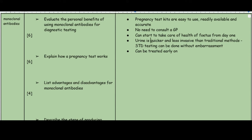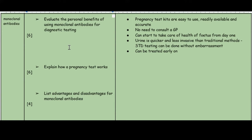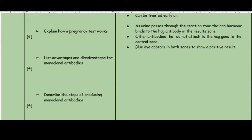Explain how a pregnancy test works. As urine passes through the reaction zone, the HCG hormone binds to the HCG antibody in the results zone — when pregnant, you have HCG in your urine. If pregnant, HCG binds to the antibody and blue dye appears in both zones. If not pregnant, it doesn't bind and no dye appears. There is also a control zone containing other antibodies to show that the pregnancy test is viable and trustworthy.